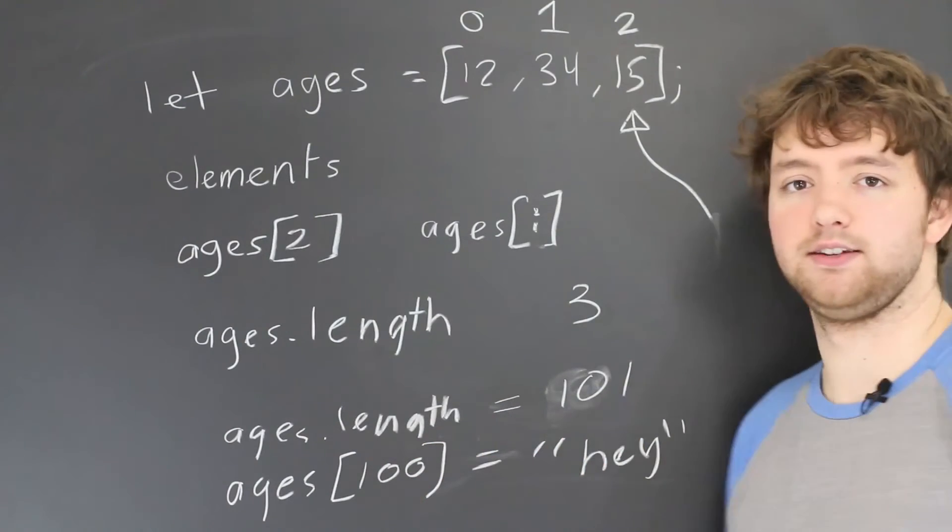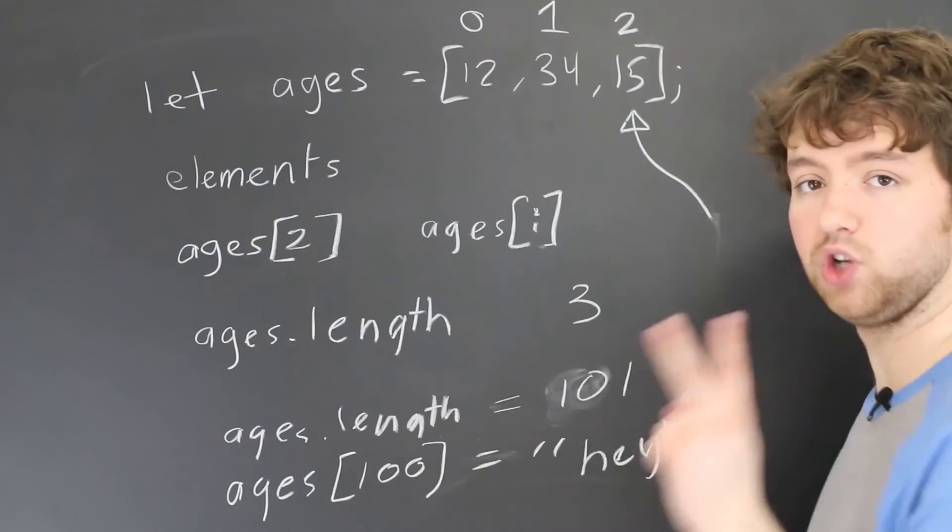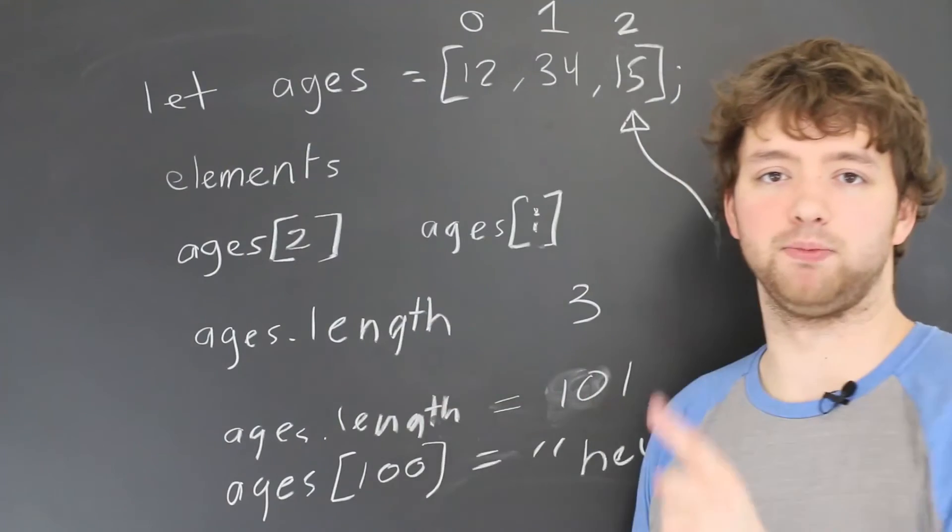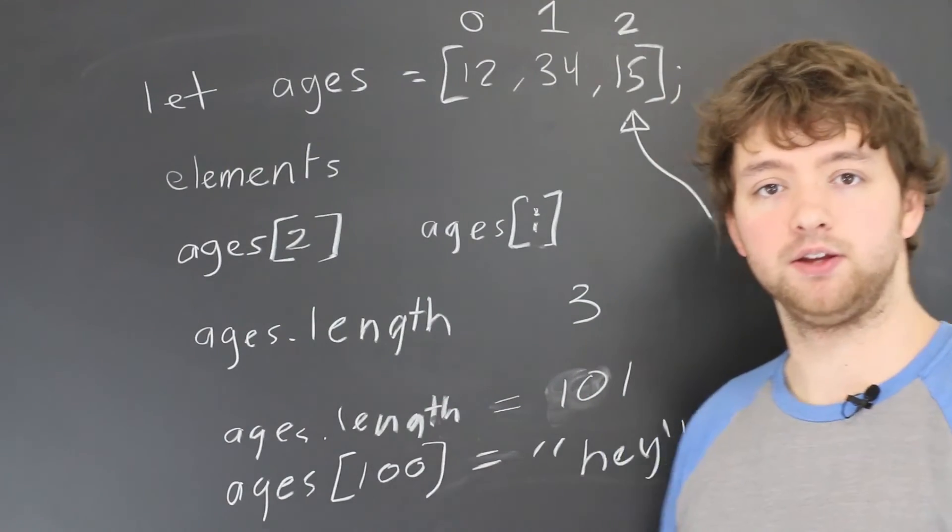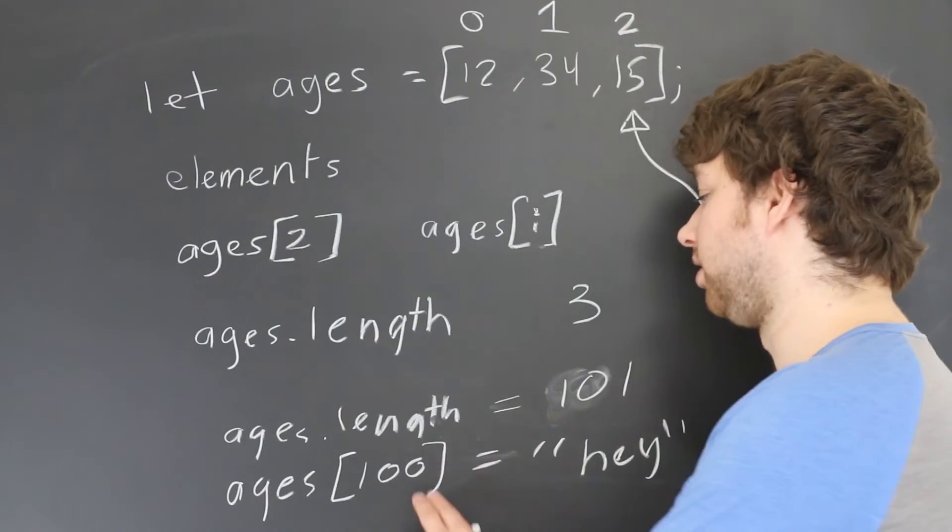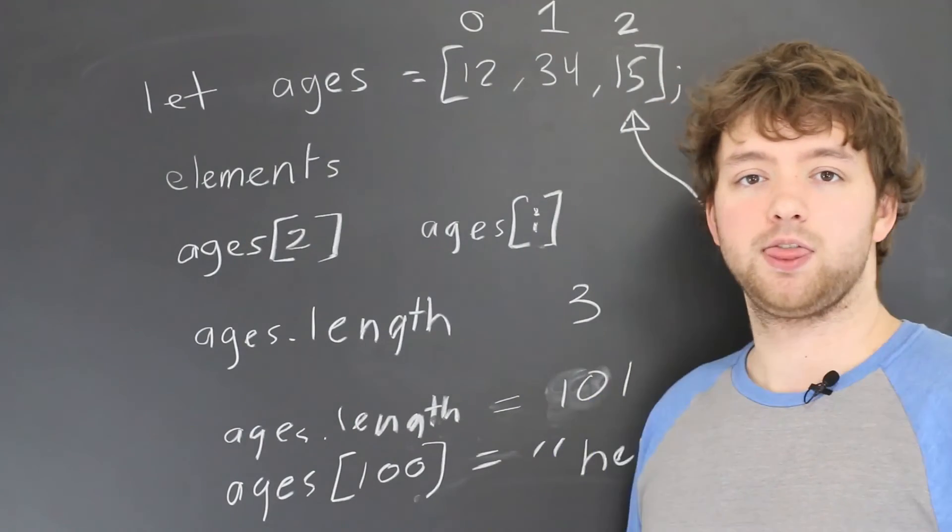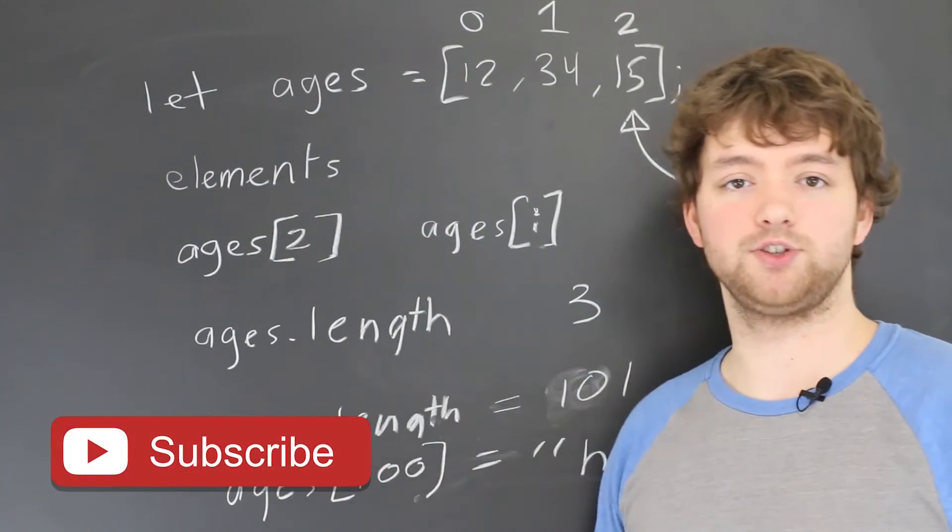So those are two things you got to know about JavaScript arrays. One, you can change the length property, putting gaps in the array. Two, you can assign to an index that does not exist and it will extend that array. JavaScript is very loose in this nature, so you just got to make sure you know what you're doing.